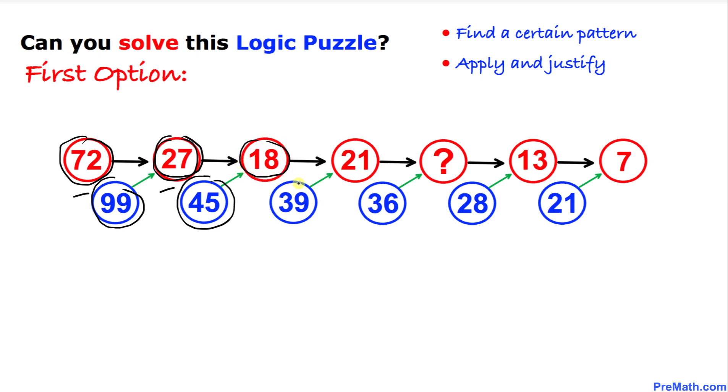We're going to repeat the same process once again. 39 minus 18 is going to give us the next number 21. And now once again, we're going to repeat the same process. 36 minus 21, this number is supposed to be 15. So that means in this question mark, this number turns out to be 15.